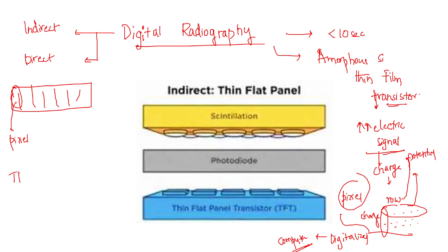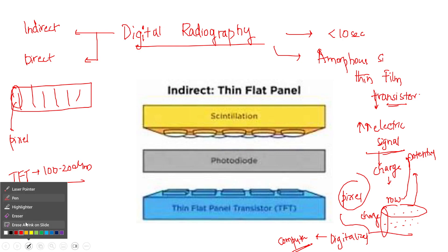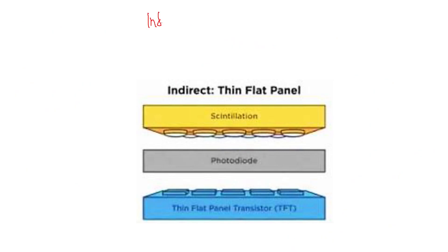The thin film transistor size is around 100 to 200 micrometers. X-ray or light detectors are mainly deposited above the charge collecting device on the plate. We will revisit each of these mechanisms when we cover indirect conversion detectors, TFT detectors, and direct digital radiography. In indirect digital radiography, the system used is the thin film transistor system, also called a charge coupled device.